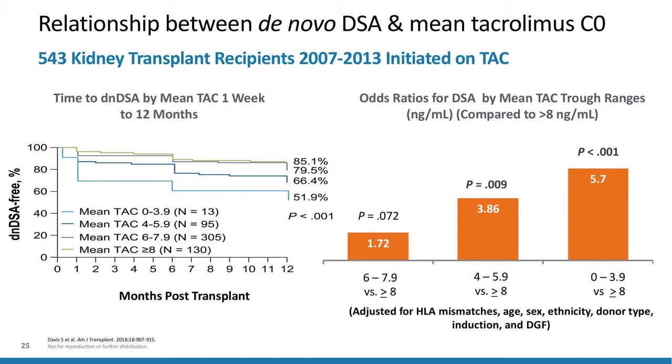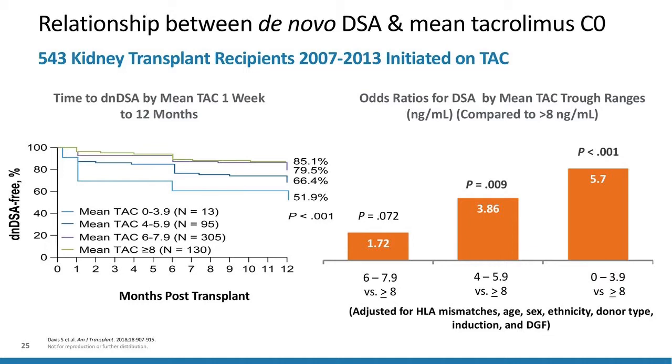These slides demonstrate the need for better surveillance tools. We utilize biopsies, donor-specific antibody, and therapeutic drug monitoring in a predictive way, but it is very difficult to act upon those findings. Averaging mean tacrolimus trough levels requires time, we don't have great therapies to treat DSA formation, and we don't know if all DSA is equally pathogenic. There is definitely an opportunity to improve immunologic monitoring.